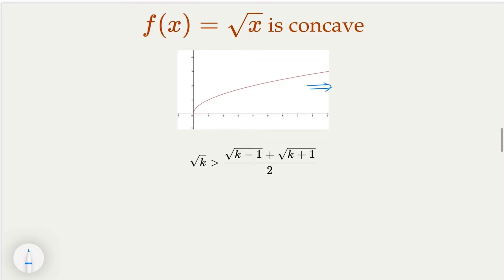Let's magnify this. In the neighborhood of a particular integer value k, if you connect the two points at k minus 1 and k plus 1, the midpoint is k. Notice that on the straight line connecting those two points, the line is always under the curve. In other words, the average of the values at k minus 1 and k plus 1 is smaller than the function value at k, which is the square root of k.